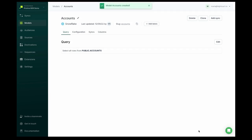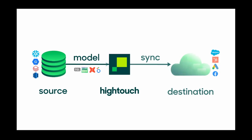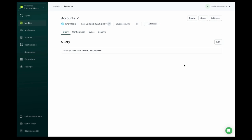Next, we need to set up a sync. While models define what data to grab from our source, syncs declare how we want that data to show up in our destination, including how we match records and map fields. From the model we've just created, we can click Add Sync.